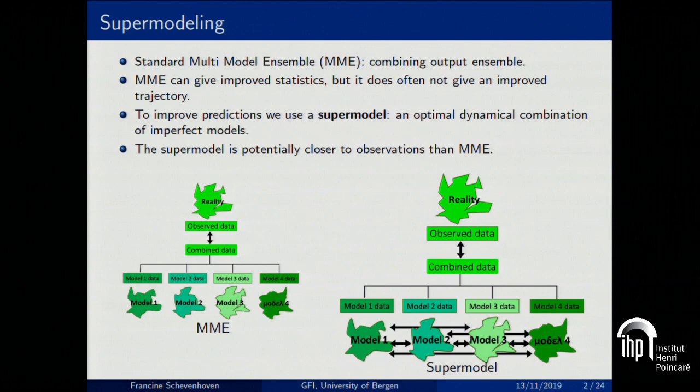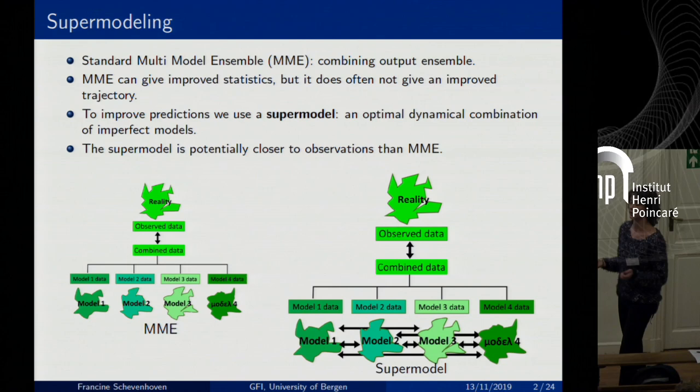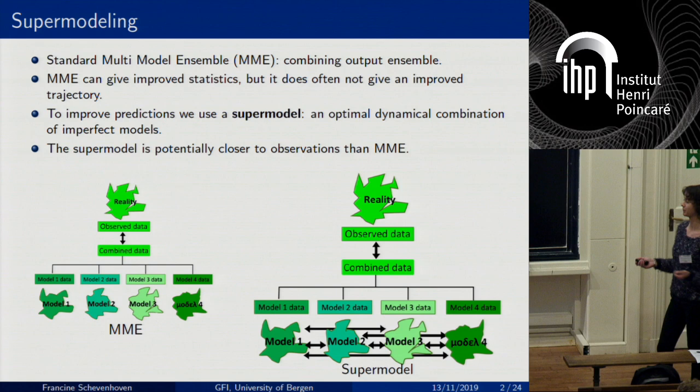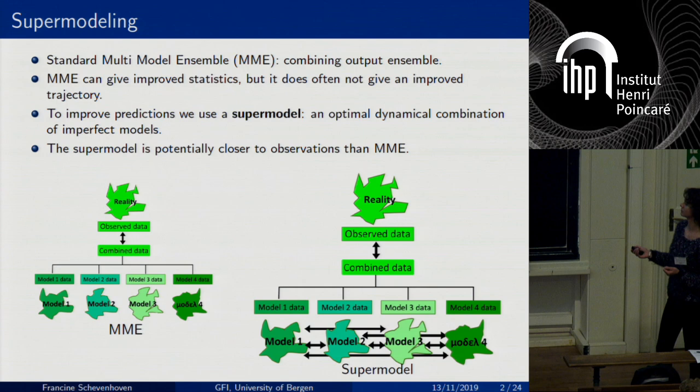We think we can do better with supermodeling. Within a supermodel, the imperfect models interact with each other during the simulation. As you can see in the figure on the right, they exchange information with each other, indicated by the arrows. So they are dynamically combined. This dynamical combination is called a supermodel.